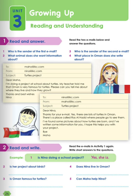Number 1, we're going to read and answer. Read the two emails below and answer the questions. Before we read the emails, let's read the questions first. Number 1, who is the sender of the first email? 2, what animal does she want information about? 3, who is the sender of the second email? 4, what place in Oman does she write about?